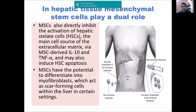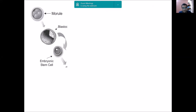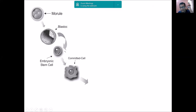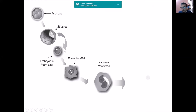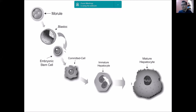For hepatic stem cells: mesenchymal stem cells can directly inhibit the activation of hepatic stellate cells, the main source of extracellular matrix, via different pathways. They have potential to form hepatic cells. How are they generated? From embryonic stem cells — separating the inner cell mass — with specific niche, microenvironment, and differentiation signals, we convert them to committed cells, then immature, and finally mature hepatocytes, which can be used for transplantation and also for testing of drug toxicity.